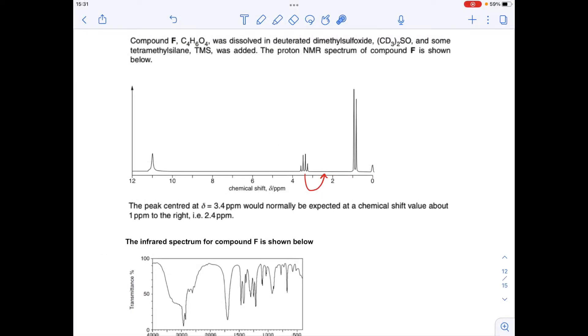Okay, so we'll go through the answers. Compound F has been dissolved in this deuterated dimethylsulfoxide. That's just a solvent. The deuterium's there so it doesn't give a signal in a proton NMR spectrum.